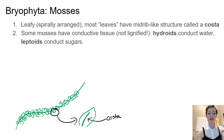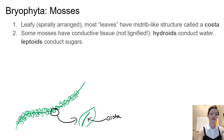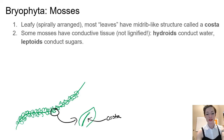Some mosses have conductive tissue. It's not lignified — we saw that in Dawsonia — and those would be hydroids that conduct water and leptoids that conduct sugars. So this is our gametophyte, and generally we'll have male and female gametophytes, just like we had in the liverworts.